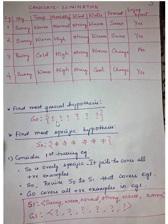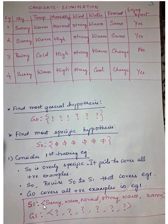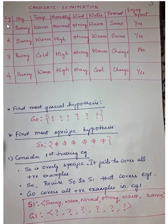If you observe G0, all the values are question mark, which means it can take any value — so it covers all values of example 1. Sunny is fine, warm is fine, normal is fine — the generic hypothesis G0 is covering all the positive examples in example 1, so we need not change G0. G1 remains all question marks. Since S0 was all null values and not covering any values of example 1, we copy the same attribute values to S1. Therefore, S1 is: sunny, warm, normal, strong, warm, same.